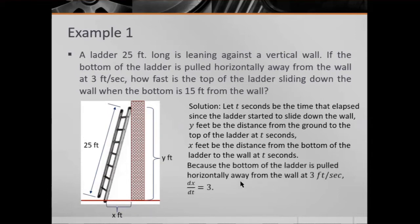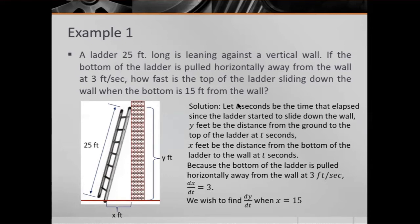Because the bottom of the ladder is pulled horizontally away from the wall at 3 feet per second, we have dx/dt = 3. We wish to find dy/dt when x = 15 feet. So dy/dt — the derivative of y with respect to t — is our target.